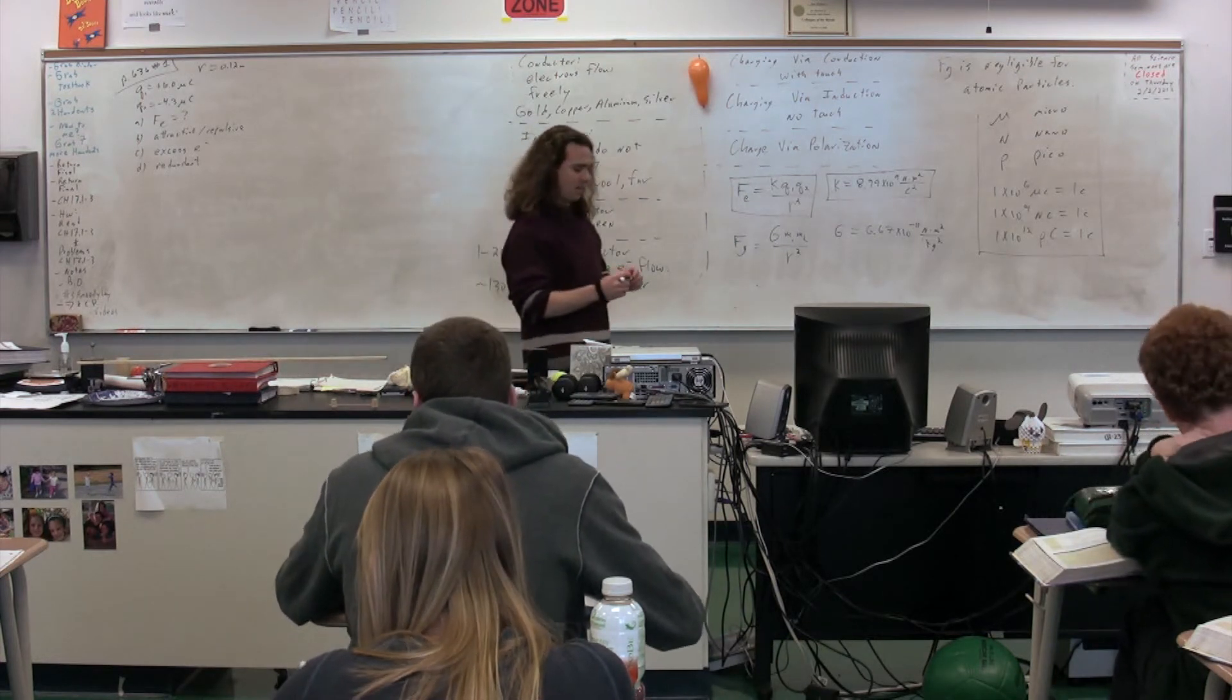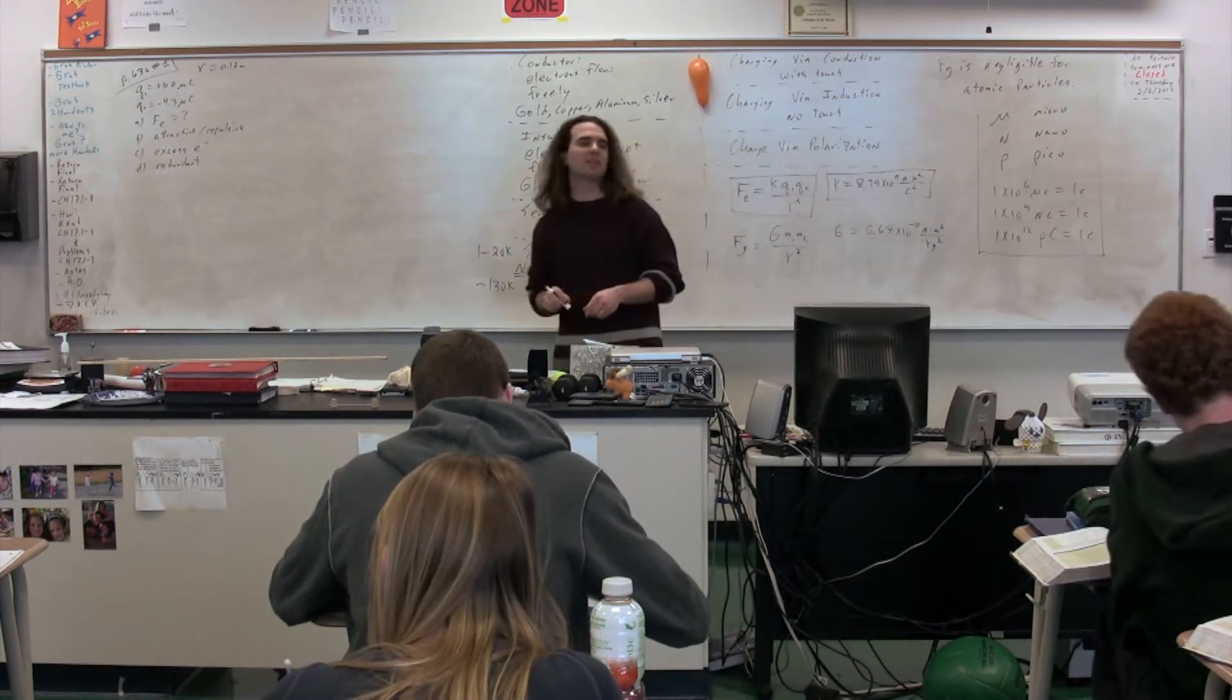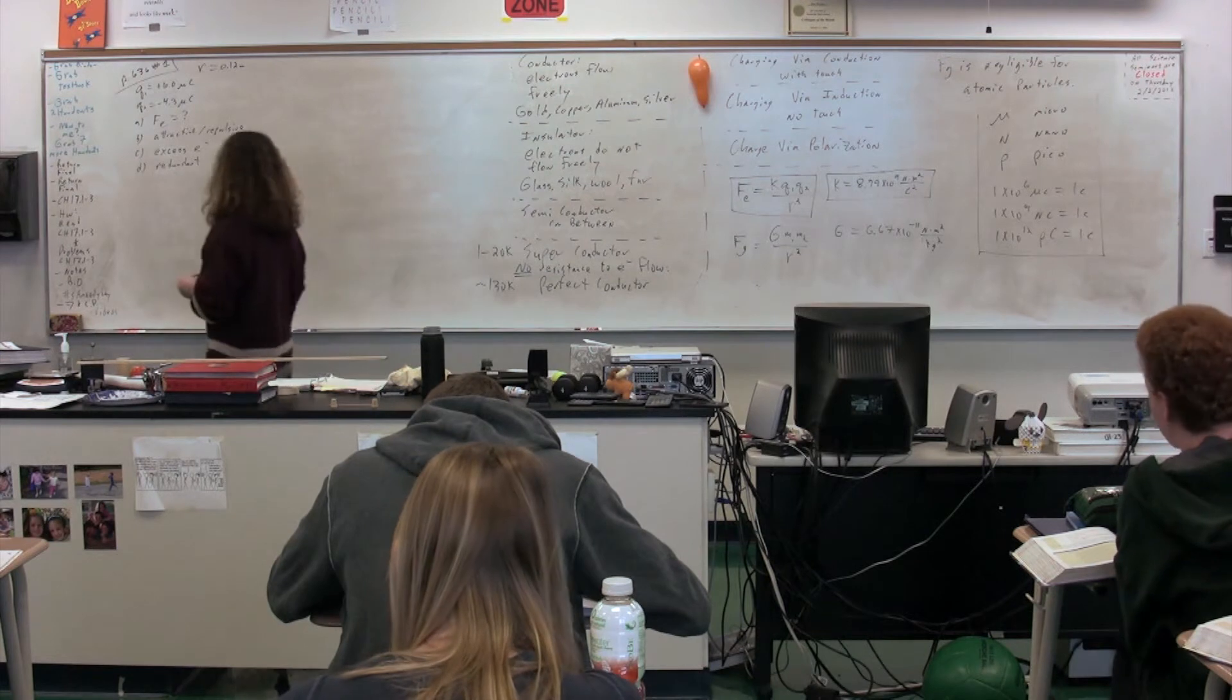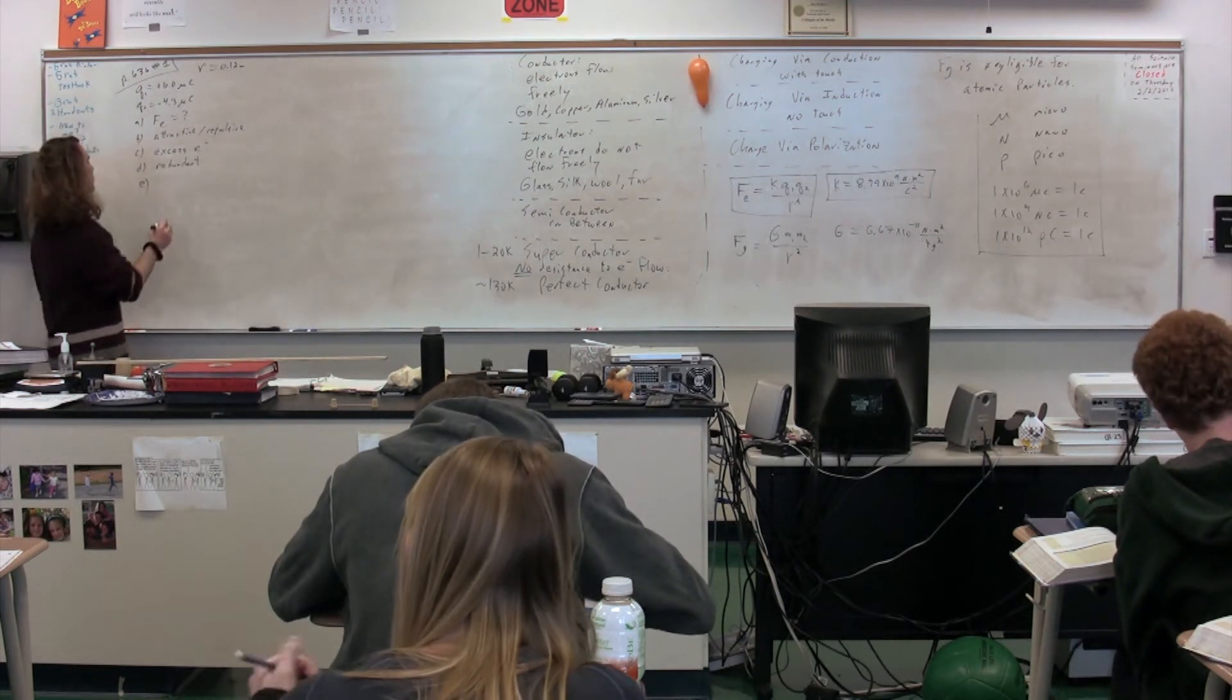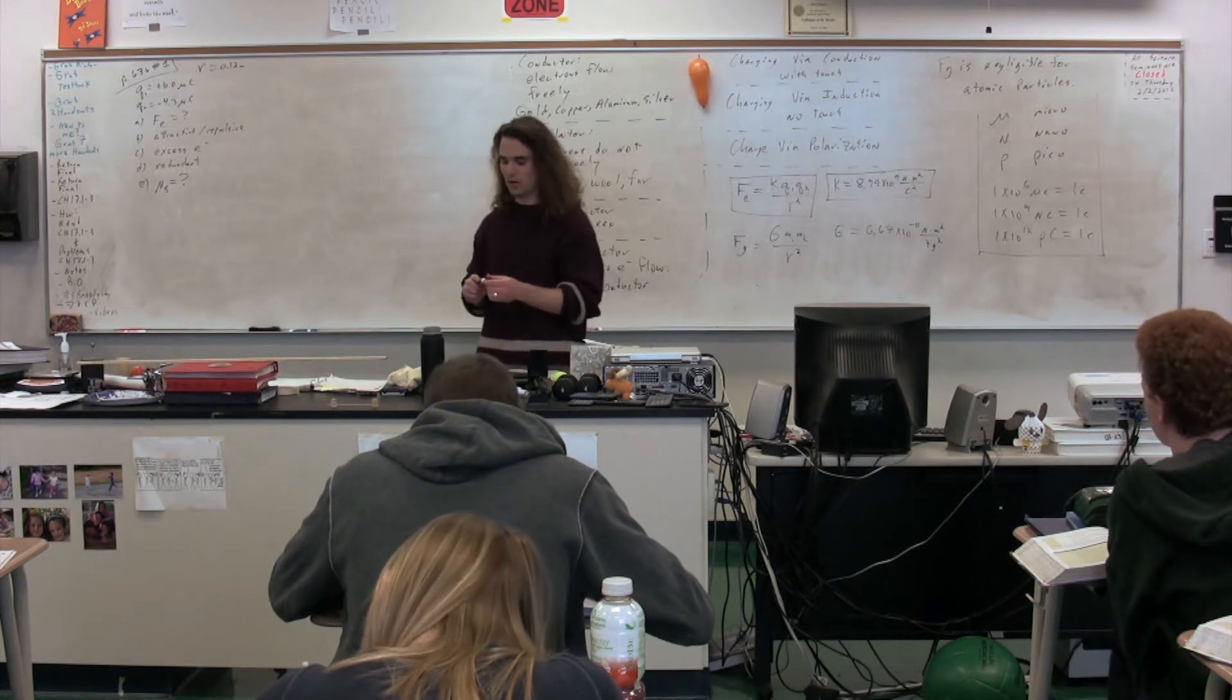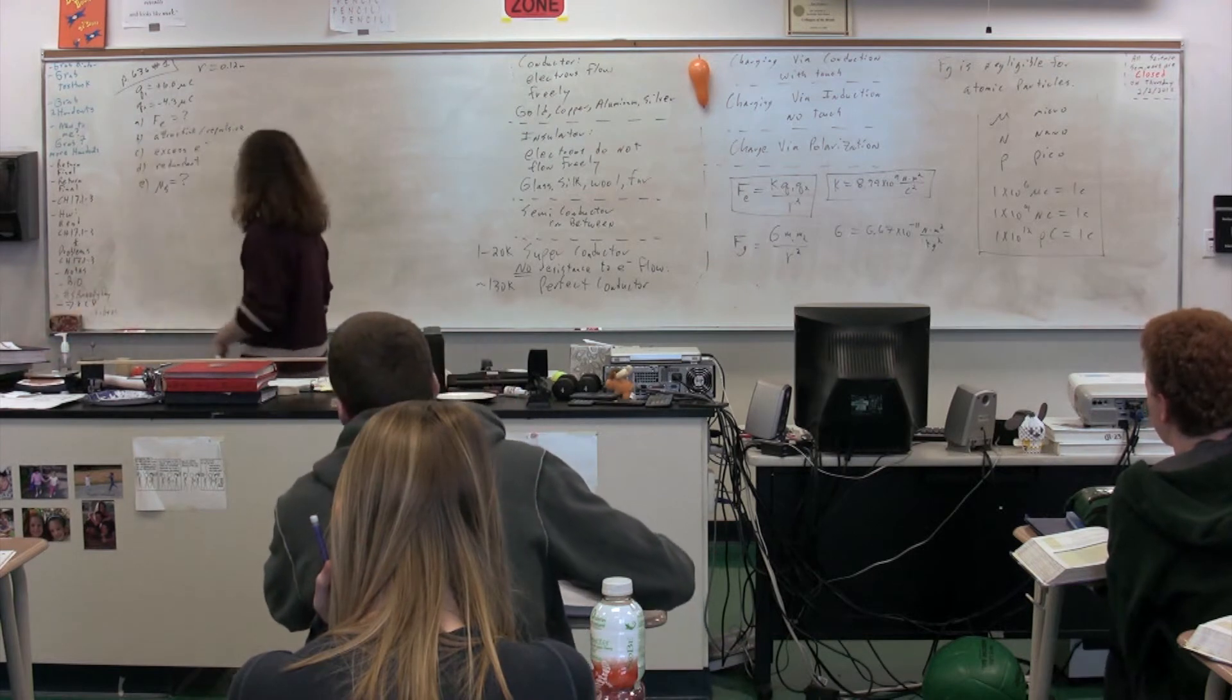Part A, we're looking for the electric force that exists between the two of them. Part B, we're trying to determine whether it's attractive or repulsive. Part C, we're trying to figure out the excess number of electrons on Q2. Part D is redundant, and I'll talk about why and why we're not going to do it. But we are going to do part E, which is to figure out the coefficient of static friction that exists between the cork and the lab table in order to keep the cork on the lab table. In order to do so, we do need the mass of the cork, so we're going to take a moment and mass this cork.